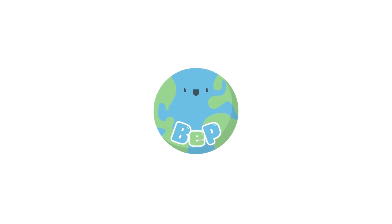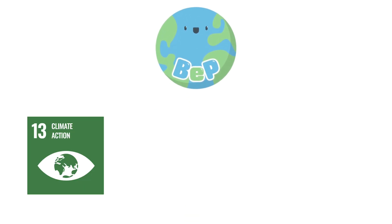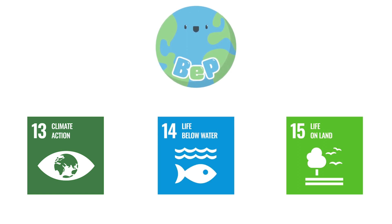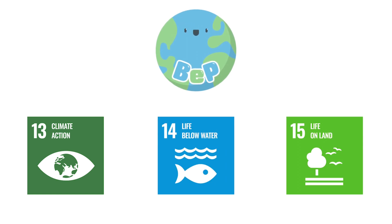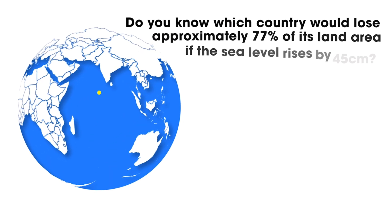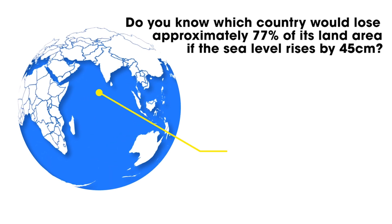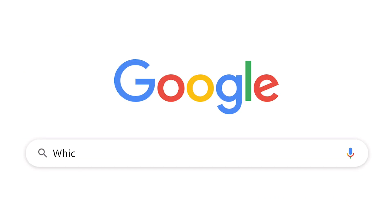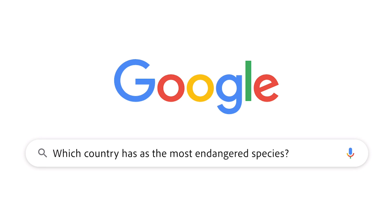BEP has identified three categories, namely climate action, life below water, and life on land, and is offering quizzes related to each of these categories. By taking these quizzes, users can easily and enjoyably learn about the location of specific countries included in each category and the problems they are facing.